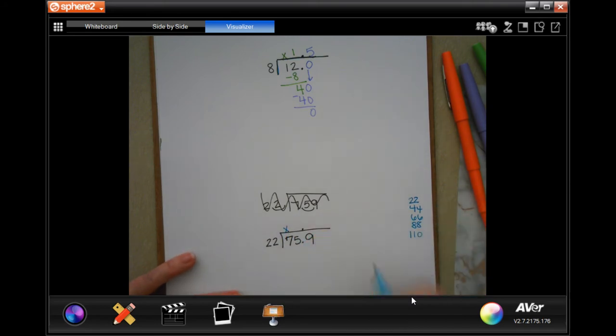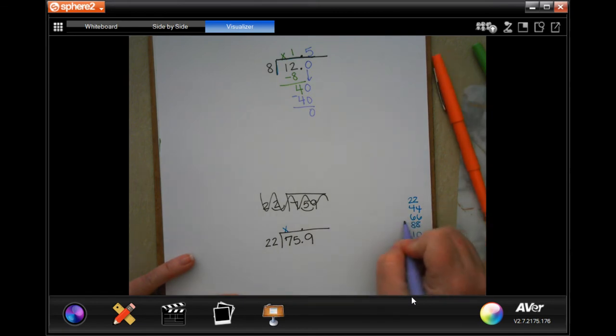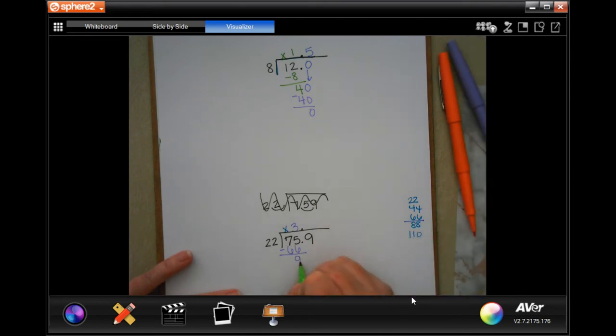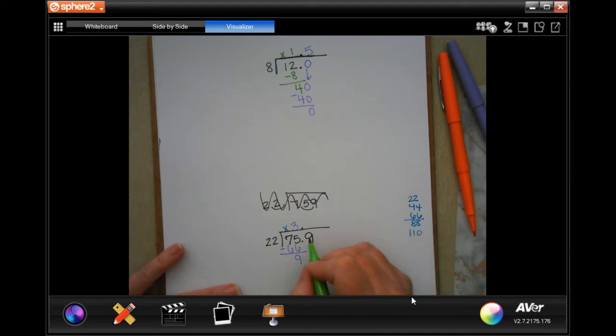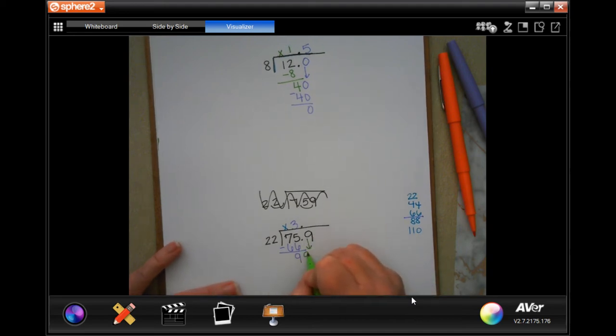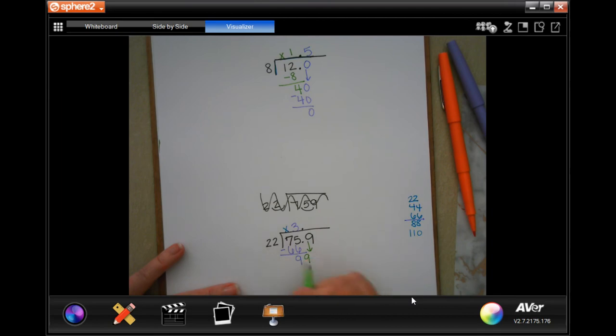Now, 22 is not going to go into 7. Placeholder. 22 is going into 75. It looks like 66 is going to be the best we can get. So that's a 3. 66. Subtract. I'm going to get 9. Now, I'm going to check that 9 is smaller than 22. It is. So I can bring down my other 9.